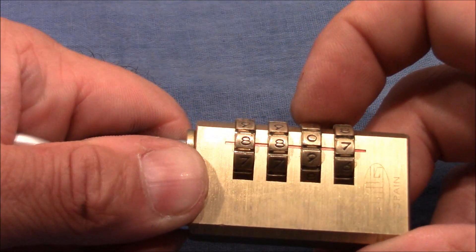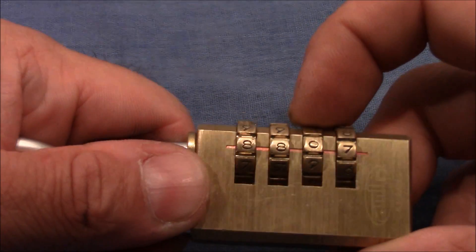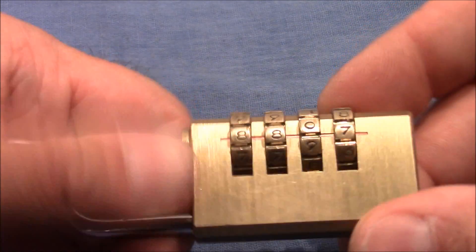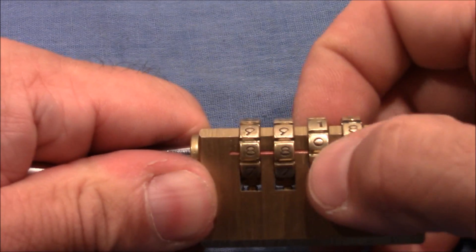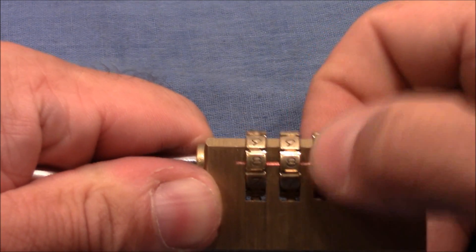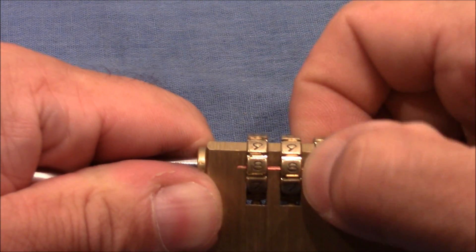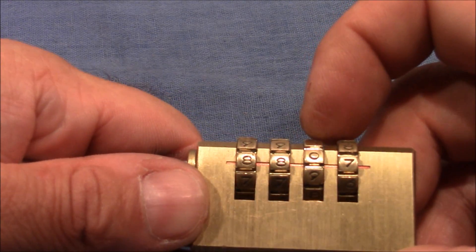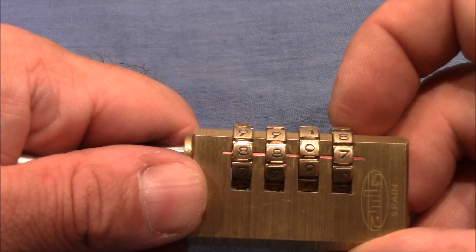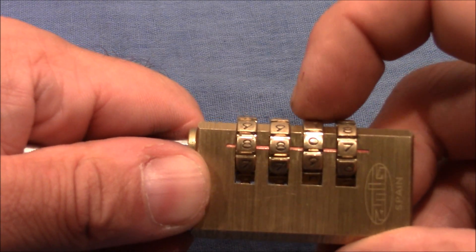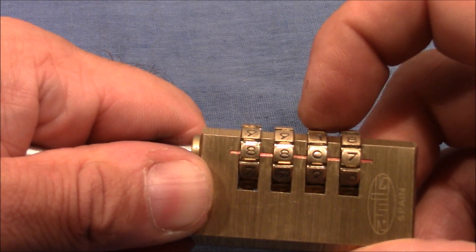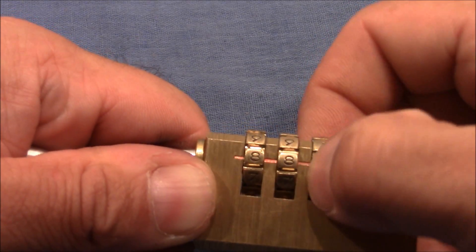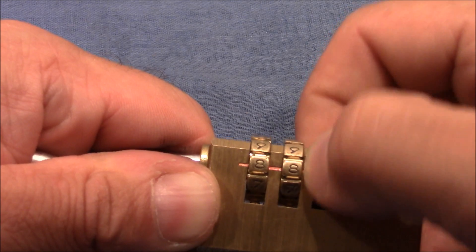And it stops again at seven, so this wheel has only one true gate. Now I want to apply a different method that can be used to detect false gates. You apply tension and you change that wheel and move it left and right and try to feel what's going on. So there is one problem with this method because the inner wheel and the outer wheel are not tightly connected.